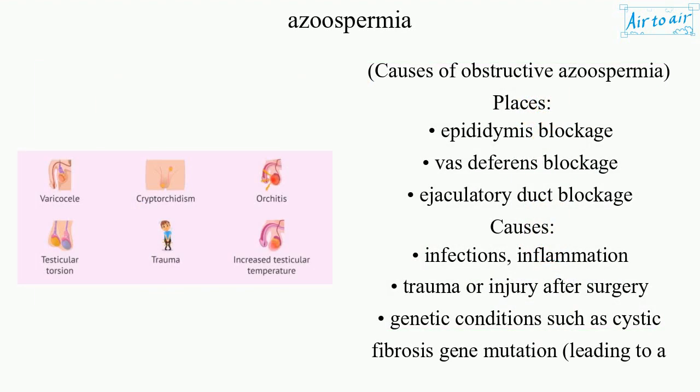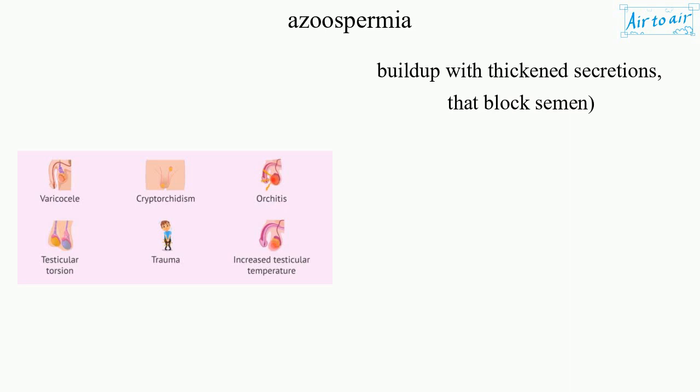Causes of obstructive azoospermia by location include epididymis blockage, vas deferens blockage, and ejaculatory duct blockage. Causes include infections, inflammation, trauma or injury after surgery, and genetic conditions such as cystic fibrosis gene mutation, leading to a buildup of thickened secretions that block semen.